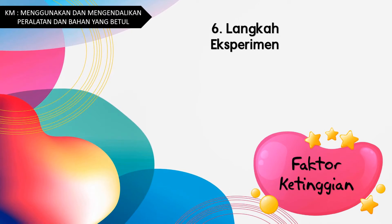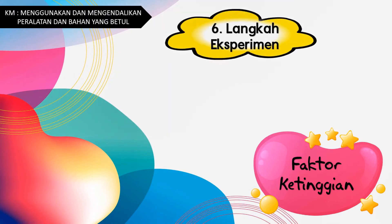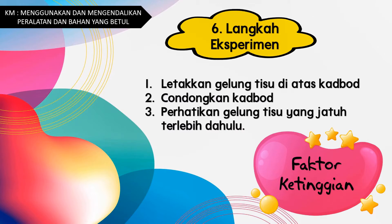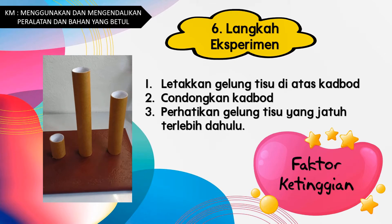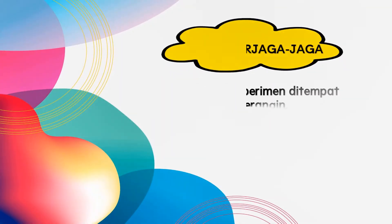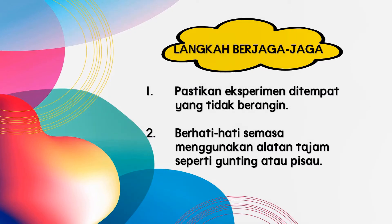Langkah-langkah eksperimen: Pertama, letakkan gelung tisu di atas kabot. Kedua, condongkan kabot. Ketiga, perhatikan gelung tisu yang jatuh terlebih dahulu. Semasa membuat amali ini, perlu ada langkah berjaga-jaga dan teknik yang betul, iaitu pastikan eksperimen di tempat yang tidak berangin, dan berhati-hati semasa menggunakan alatan tajam seperti gunting atau pisau.